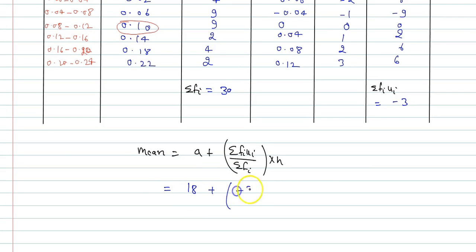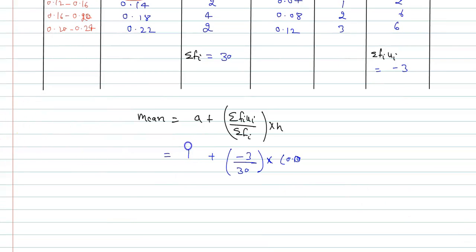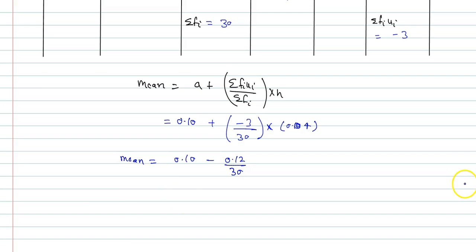So I can write assumed mean is 0.10 plus minus 3 divided by 30 into the value of h, which is 0.04. So mean can be written as 0.10, and if I multiply it, it will be 0.12 divided by 30, so mean will be 0.099 ppm mean concentration.